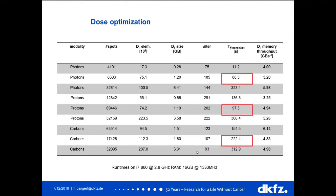Here are the optimization times for the same cases. Within a couple of minutes you have your result after fluence optimization. For the 17,000 pencil beam carbon ion case it's roughly four minutes, about one and a half minutes for the proton case, and the fluence optimization is about 88 seconds for the proton case we looked at earlier. The optimization time scales linearly with the number of dose influence matrix entries.